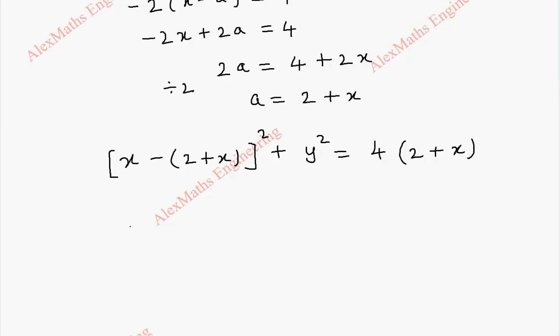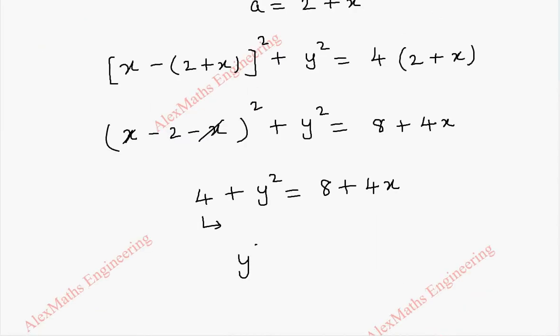this we can simplify further as (x-2-x)²+y²=8+4x. We shall take this 4 to the other side. So, y²=8-4+4x, which is 4+4x.